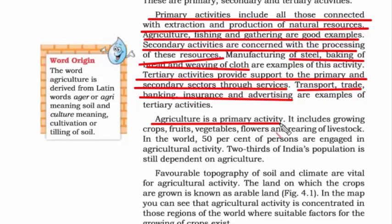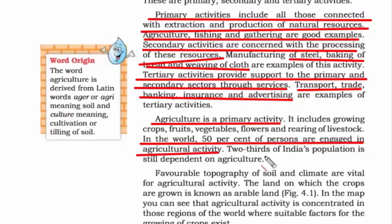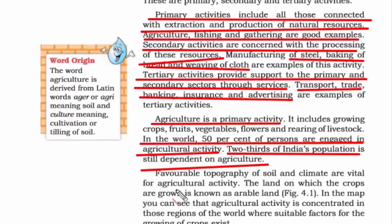Agriculture is a primary activity because to do anything — even to win a war — you need food. You cannot win a war on an empty stomach. Therefore, agriculture is the primary activity. In the world, 50% of people are engaged in agricultural activity, and when it comes to India, two-thirds of India's population is still dependent on agriculture. To have good agriculture, we need favorable topography, good soil, and the right climate — these are all crucial things for a flourishing agricultural activity.